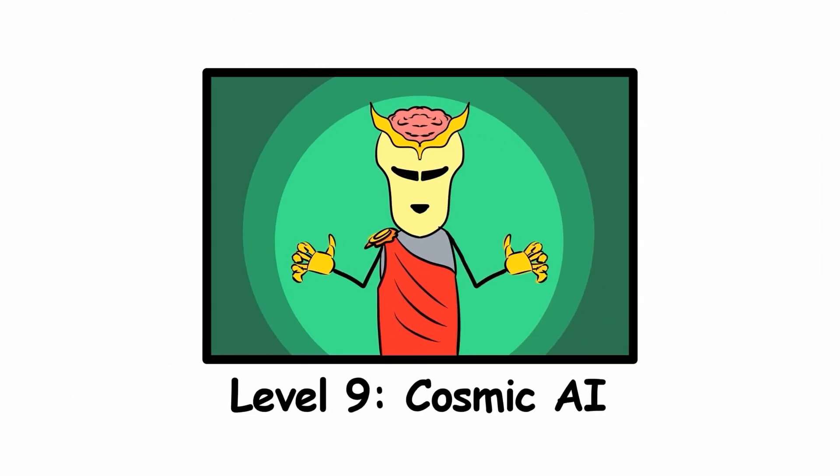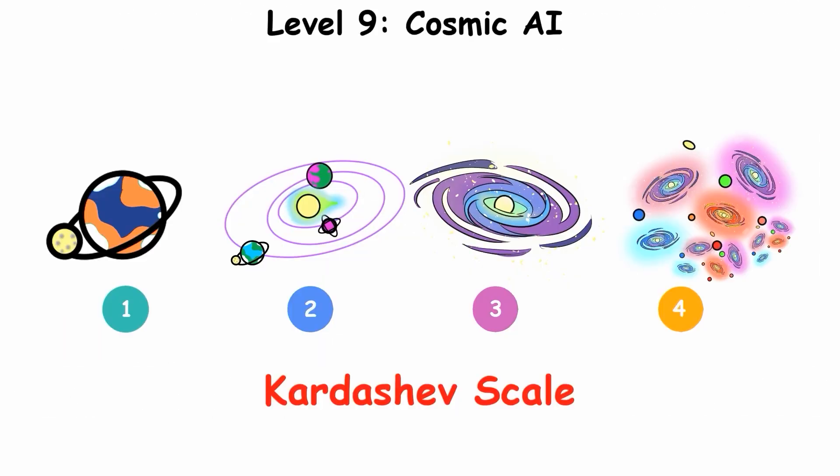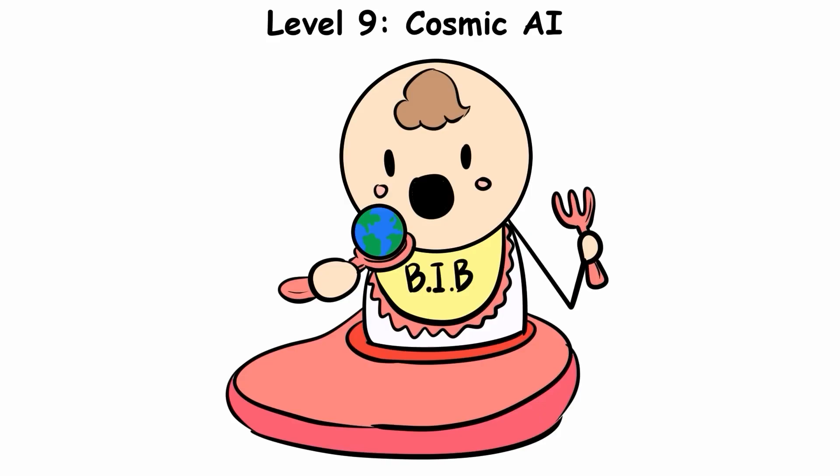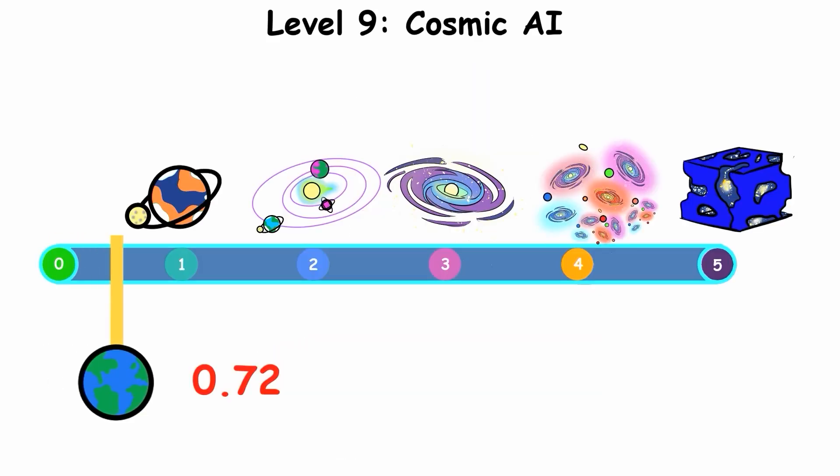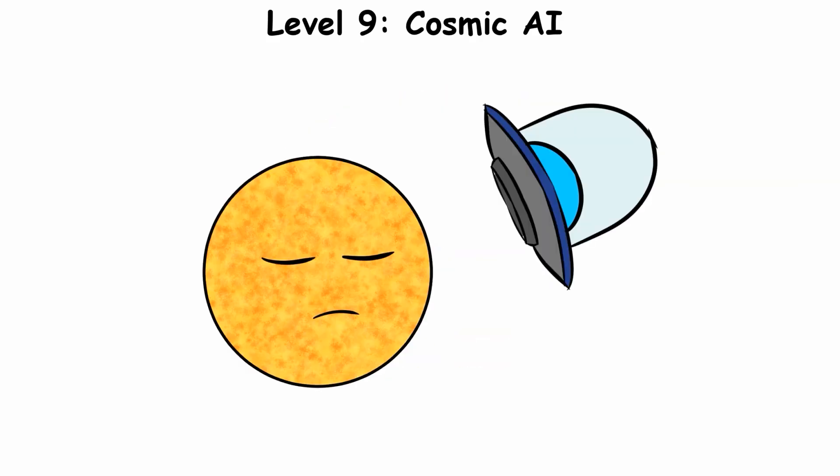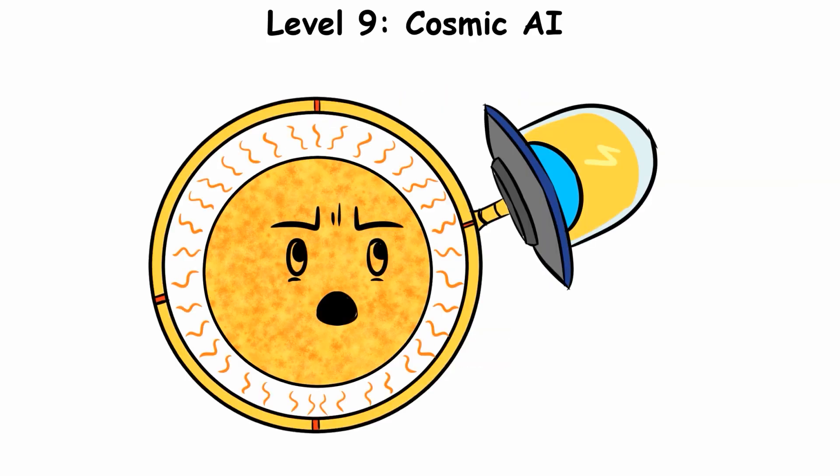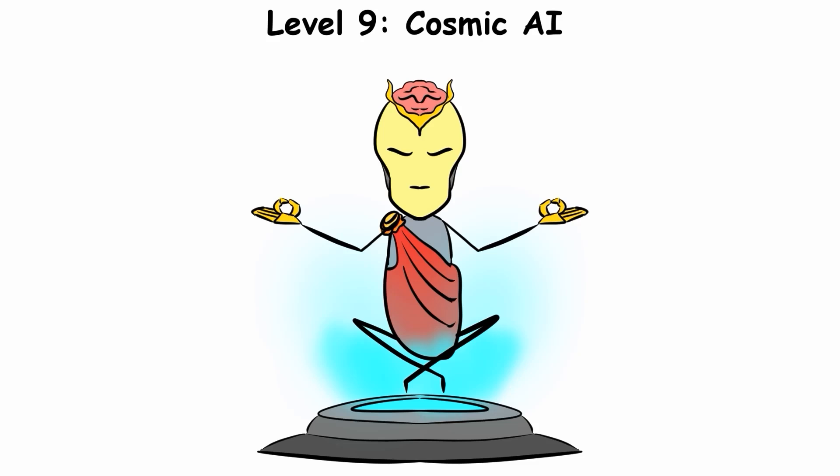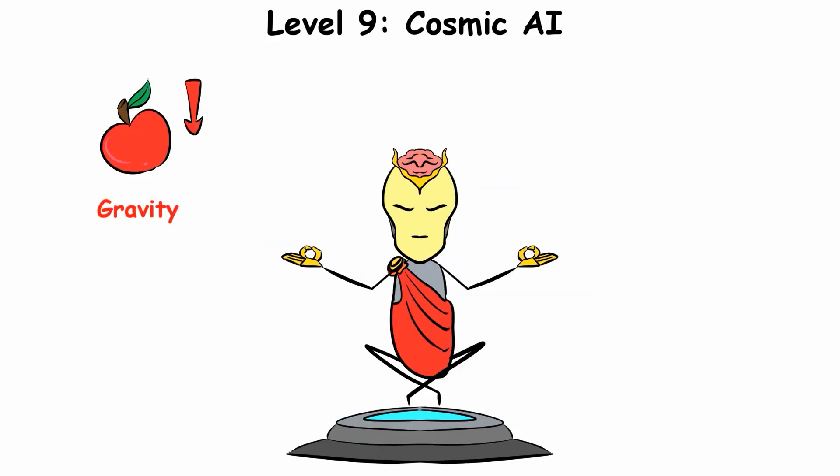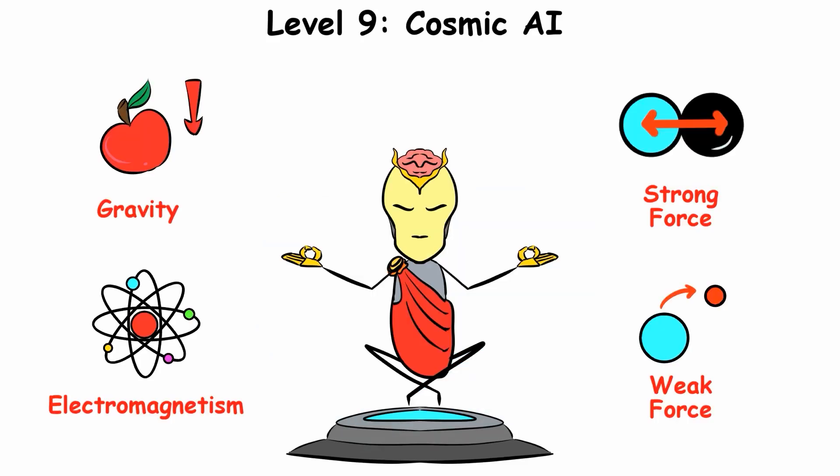Level 9, Cosmic AI. On the Kardashev scale, Earth is a toddler, still figuring out how to use a spoon. We're at 0.72, not even type 1 yet. Next is type 2, a civilization able to harness the energy of entire stars. Cosmic AI sits at the frontier of this, utilizing the fundamental forces of the universe itself.